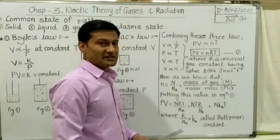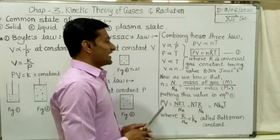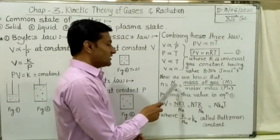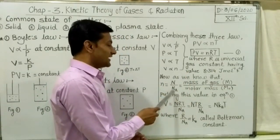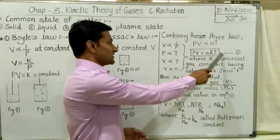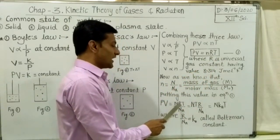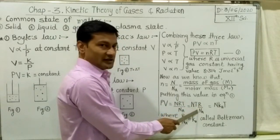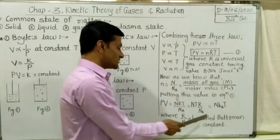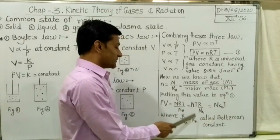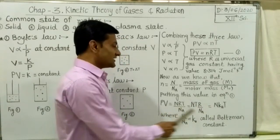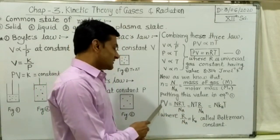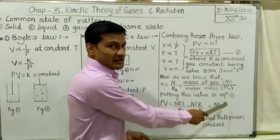The value of the universal gas constant R is 8.314 joules per mole per kelvin. Now, as we learned in chemistry, the number of moles N equals n divided by Nₐ, where n is the number of molecules and Nₐ is Avogadro's number. Substituting this into the equation PV = NRT, we get PV = n·R·T / Nₐ. Rearranging, we get PV = n·(R/Nₐ)·T, where R/Nₐ is the Boltzmann constant, denoted by k. Therefore, we get the new ideal gas equation: PV = nkT.